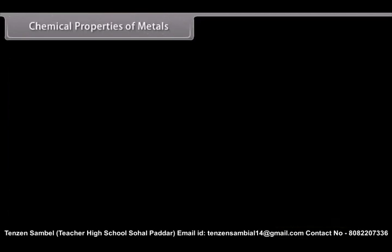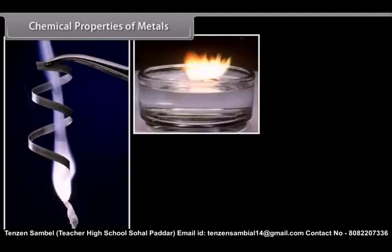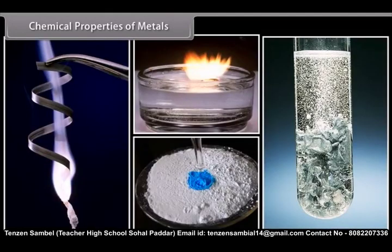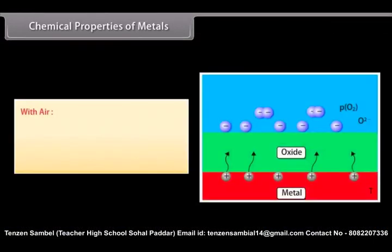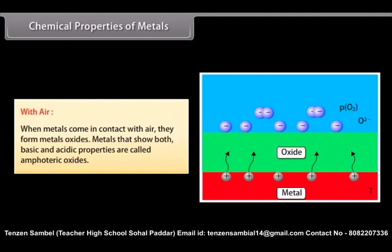Chemical properties of metals. Let us look at some chemical properties of metals. These properties include reactions of metals with other elements, that is, air, water, acids and other metal salts. With air. When metals come in contact with air, they form metal oxides. There are some metals that show both basic and acidic properties. Such metals are called amphoteric oxides.